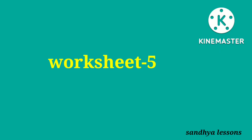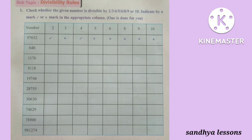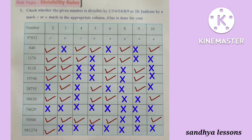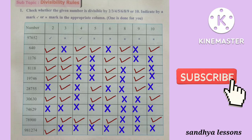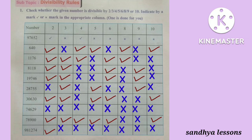Worksheet 5, First Roman: Check whether the given number is divisible by 2, 3, 4, 5, 6, 8, 9, or 10. Indicate by a right or wrong mark in the appropriate column. 640 is divisible by 2, 4, 5, 8, and 10. 1,176 is divisible by 2, 3, 4, 6, and 8. 8,118 is divisible by 2, 3, 6, and 9.